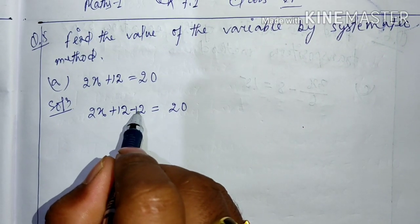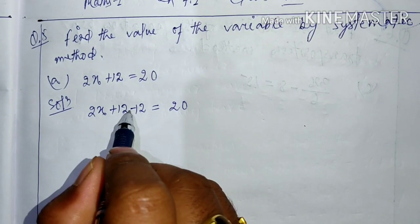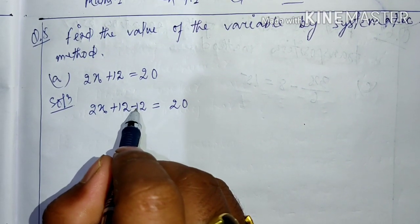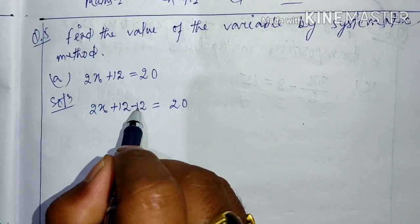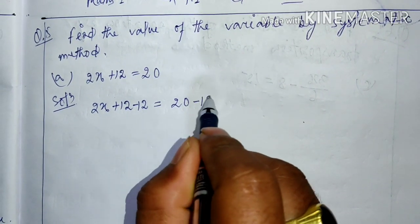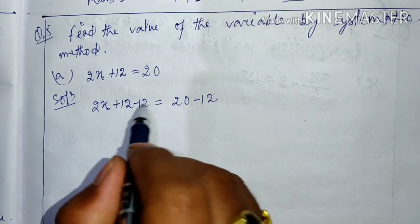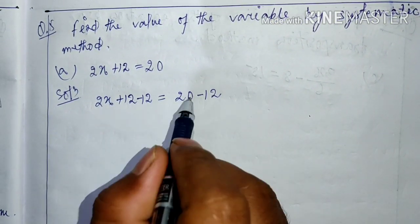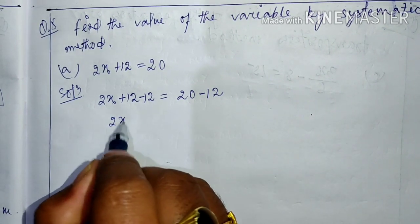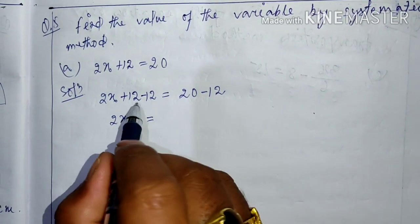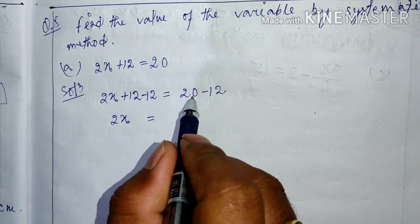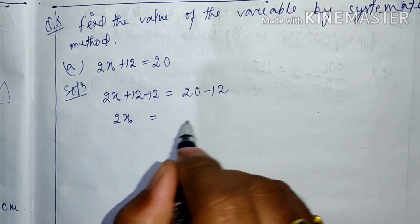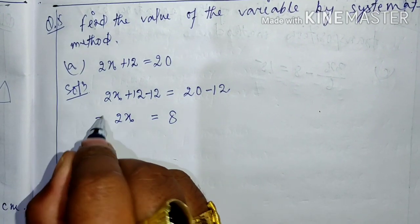To remove plus 12, we put minus 12 — plus and minus gives zero. So we have subtracted 12 on this side. The same number must be subtracted on the other side — that is the systematic method: minus 12 on both sides to balance. So 2x equals 20 minus 12, which is 8.